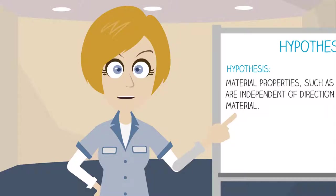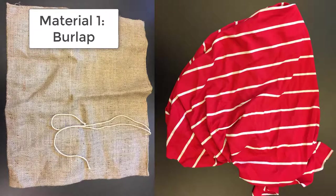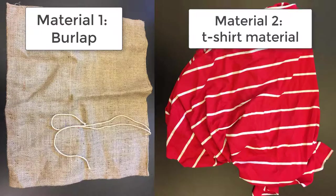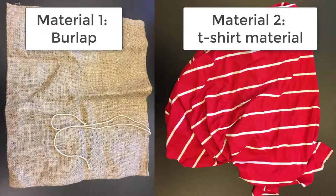Now that we have a concept for our test, let's see if we can carry it out. For this experiment, we are going to test two different materials: burlap, which is a fibrous material used for making things like potato sacks, and some cotton fabric used to make t-shirts.